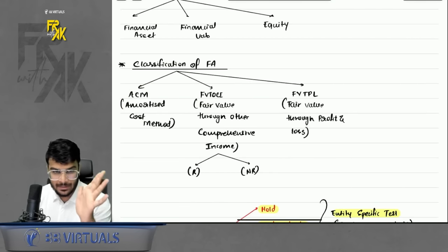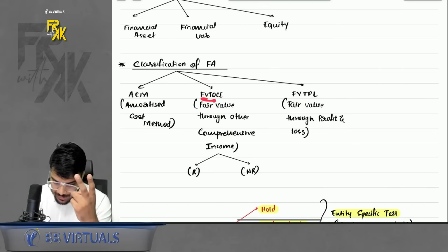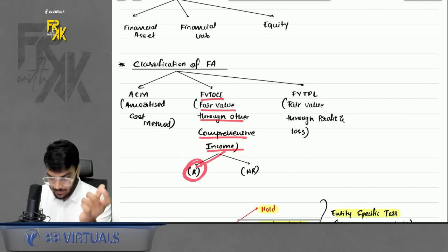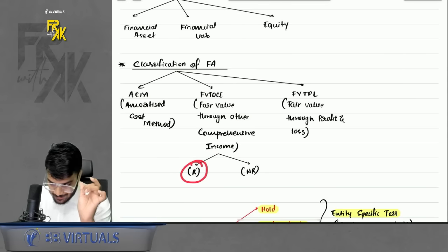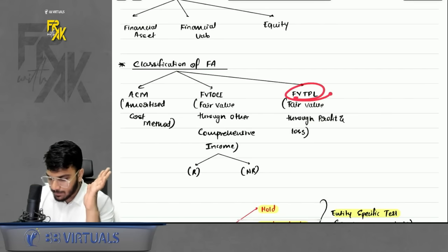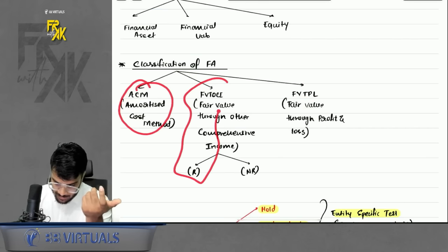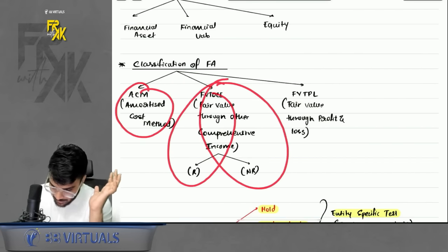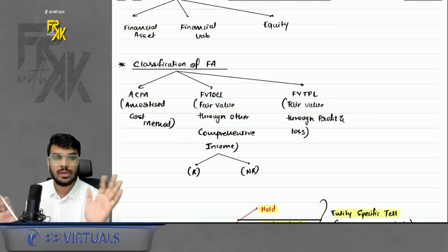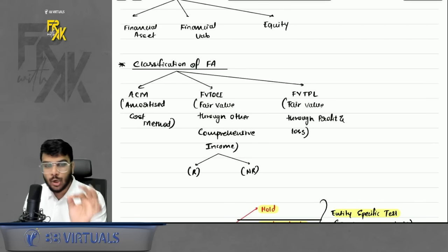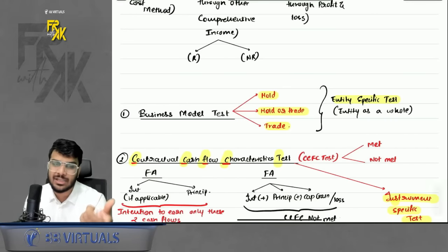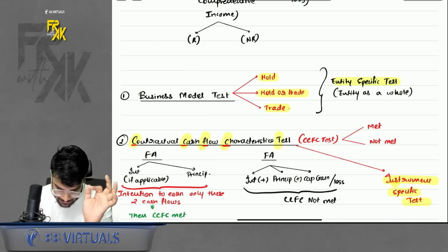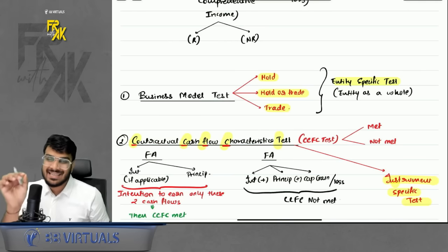The method to apply is not the company's choice — it depends on the outcome of two tests: the business model test and the contractual cash flow characteristics test, in short CCFC test. The business model test has three outcomes: hold — you hold instruments till maturity; hold or trade — you might hold or sell if a better opportunity arises; and trade — you always intend to sell in the near future. The business model test is entity-specific — assessed for the entity as a whole.